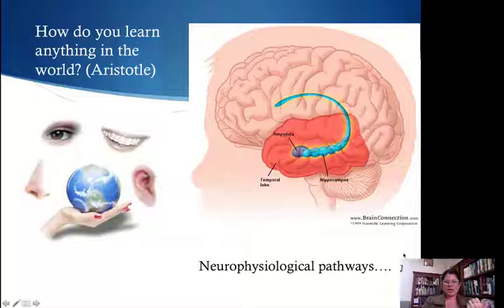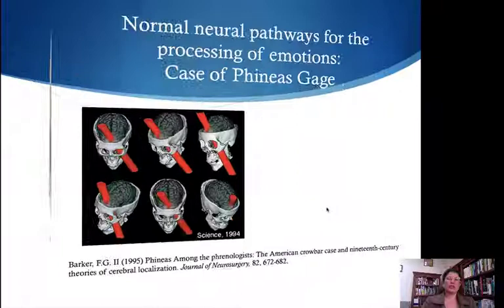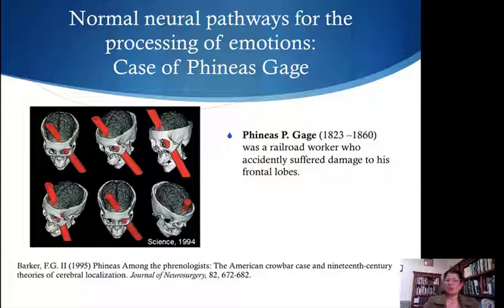We know that the neurophysiological pathways make it impossible to take a decision without emotions. But we also know that the link between the amygdala and frontal lobes plays a really important role. This was actually shown graphically in the case of Phineas Gage.